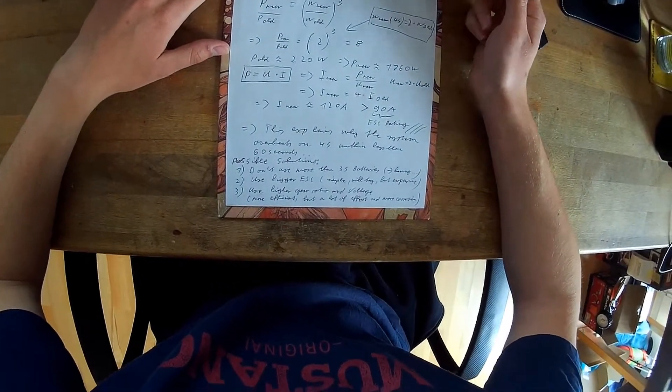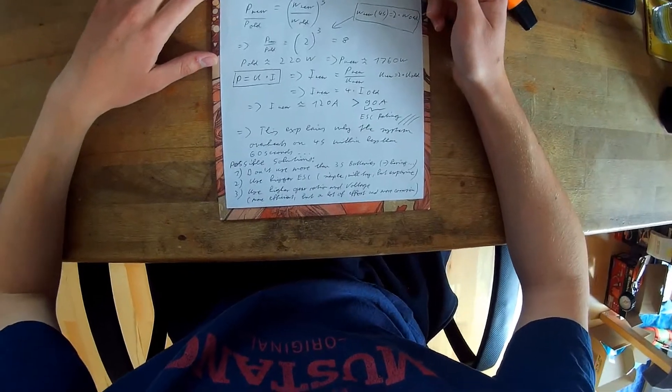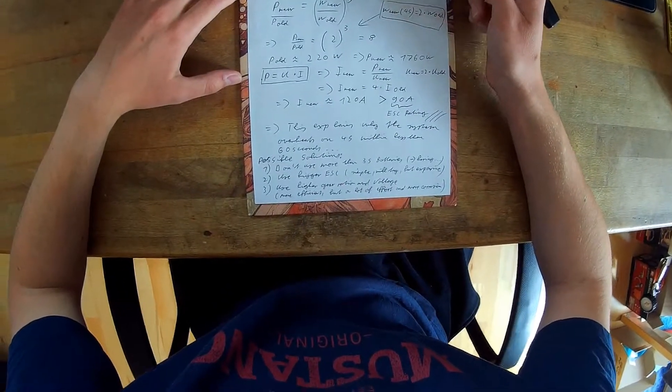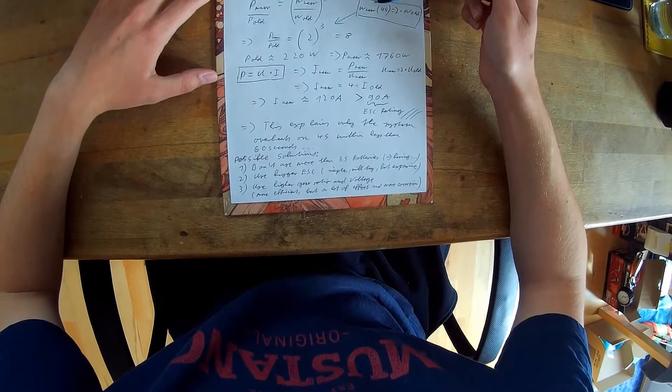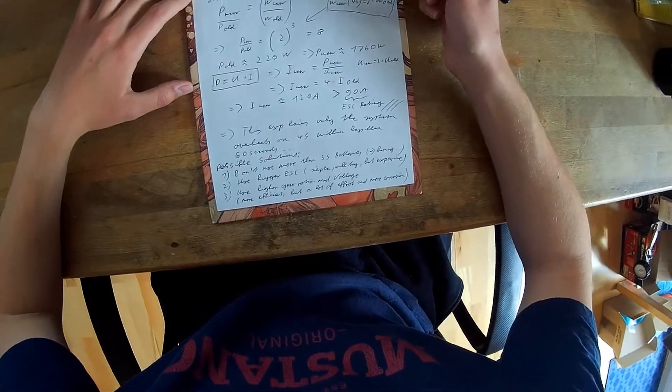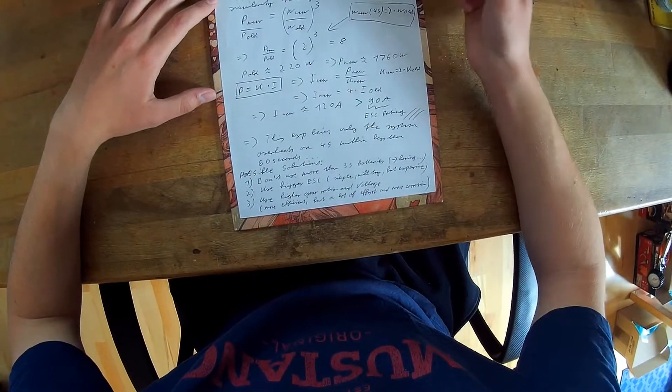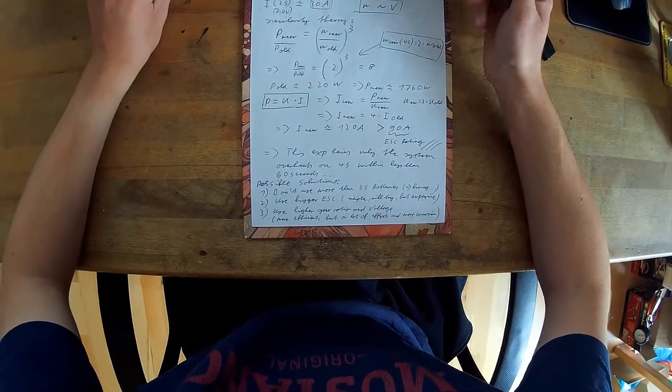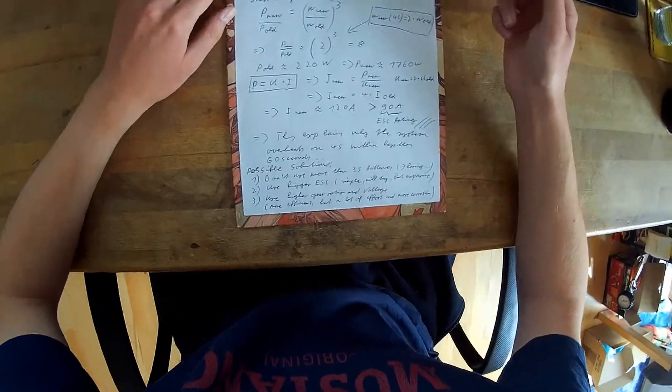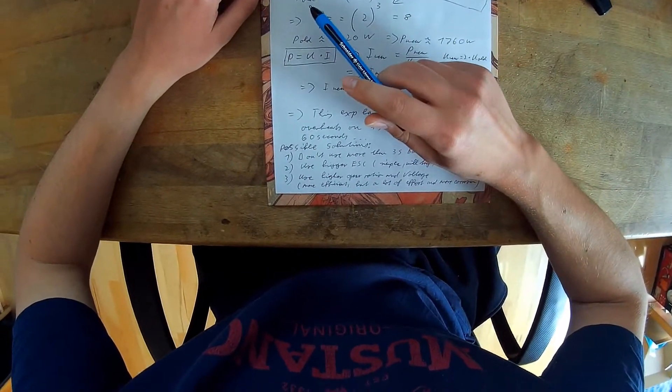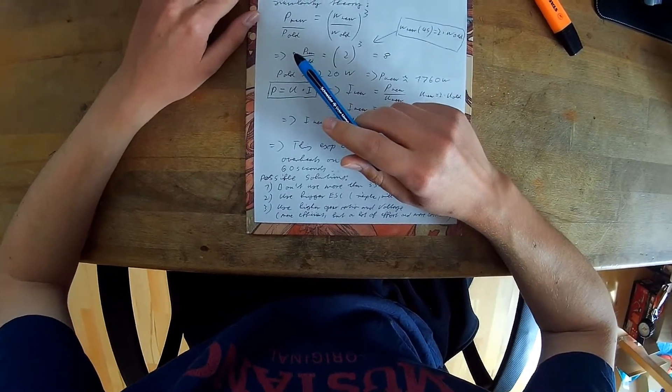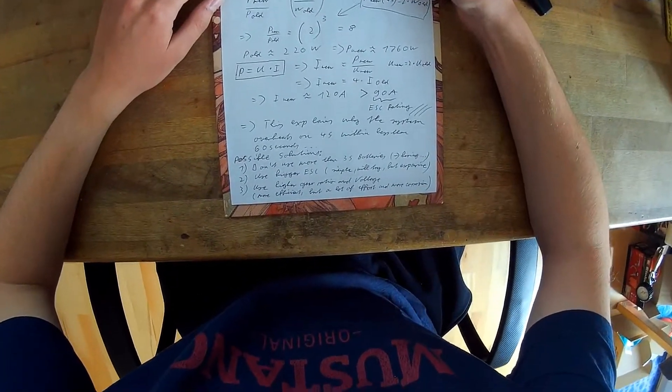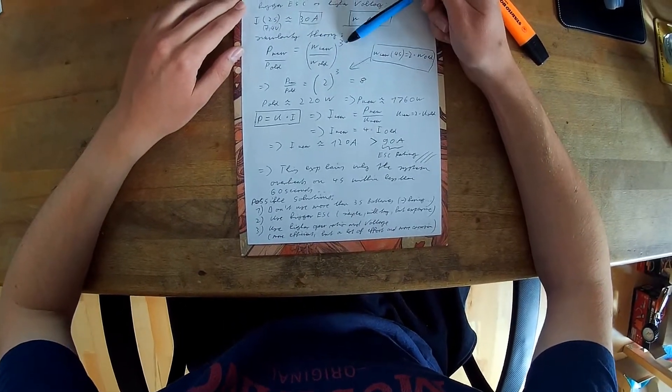So the RPM of the motor is proportional to the voltage. And we can use formulas of similarity theory to calculate how much more power and when we know the proportions of RPM and voltage, then we can calculate the new current at different battery levels, different voltages. So when we want to calculate the difference in power, this is proportional to the new RPMs divided by the old RPMs to the power of 3.